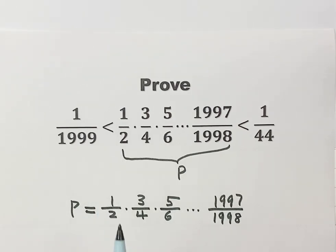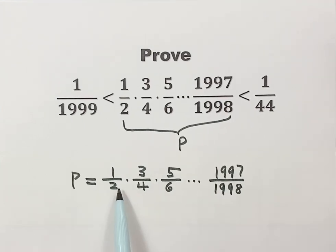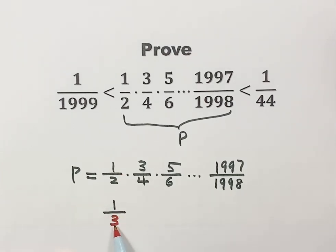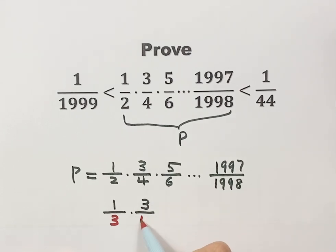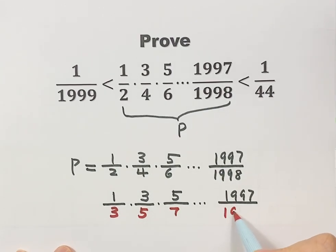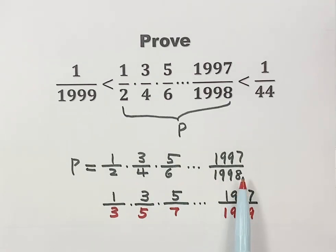So how do we prove the first inequality? For each fraction we keep the numerator the same, and on the bottom we increase by 1. So 2 plus 1 is 3. When the bottom increases, the fraction gets smaller, so 1/2 is bigger than that new fraction. We do the same thing for the next one: keep the numerator, increase the bottom by 1 to get 5. So 3/4 is bigger than 3/5. Keep going until the last term — the bottom increases by 1 — so each fraction on top is bigger than the corresponding fraction below.